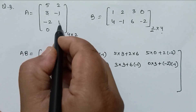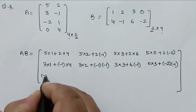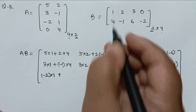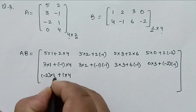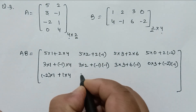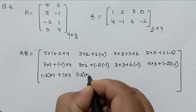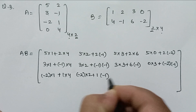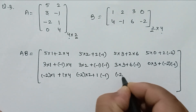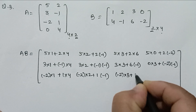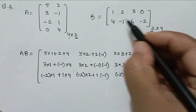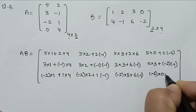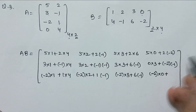For the third row, we use the third row of A with all columns of B. Third row, first column: (−2)×1 plus 1×4. Third row, second column: (−2)×2 plus 1×(−1). Third row, third column: (−2)×3 plus 6×(−1). Third row, fourth column: (−2)×0 plus 1×(−2). This is the third row of matrix AB.